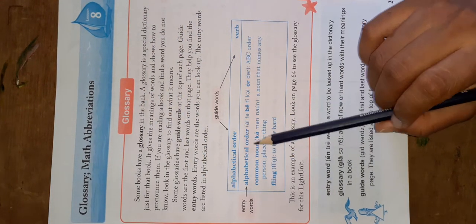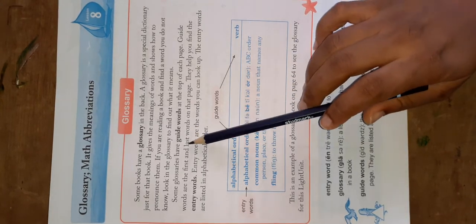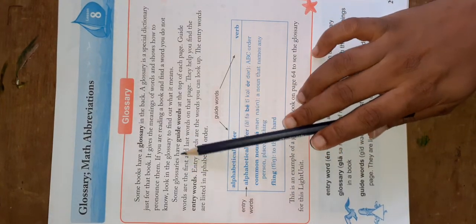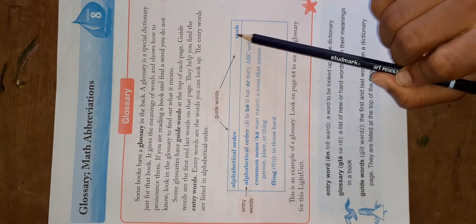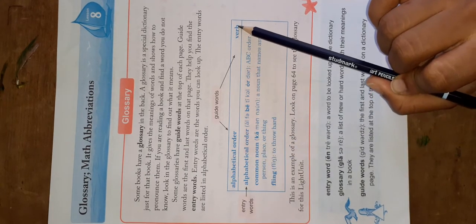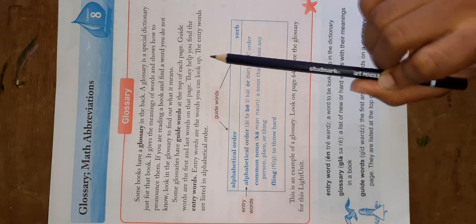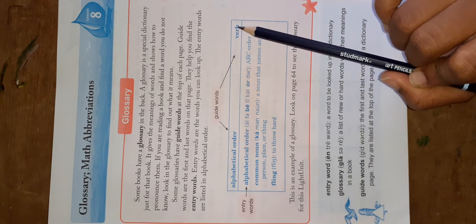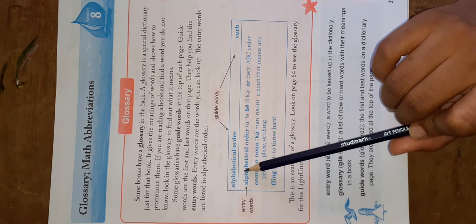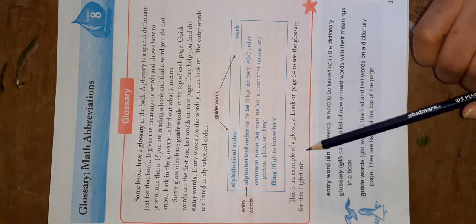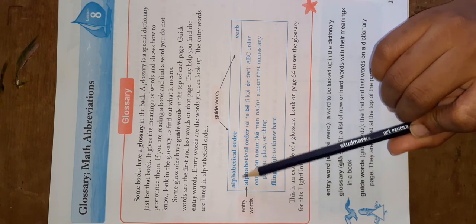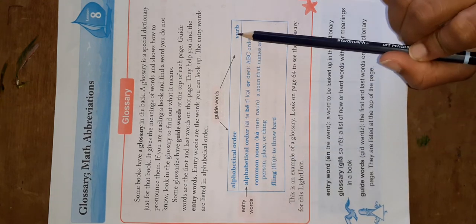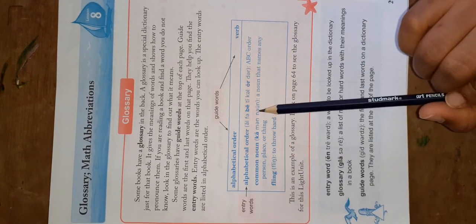Let's look at the example they provide here. Here is a glossary and we're going to look for the guide words. The guide words are at the top of the page — two guide words — and these guide words help you find the entry words. Entry words are the words you can find on that one page. This is the entry word at the top of the page, and this will be the last entry word on the page.